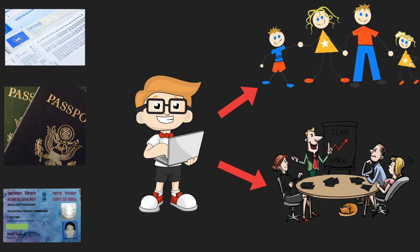I should also have my bank card, election ID card, and all government IDs ready — to avail the facilities my government provides and to prove I'm a citizen of India. So these cards are also some of my dependencies. I depend upon all these things.